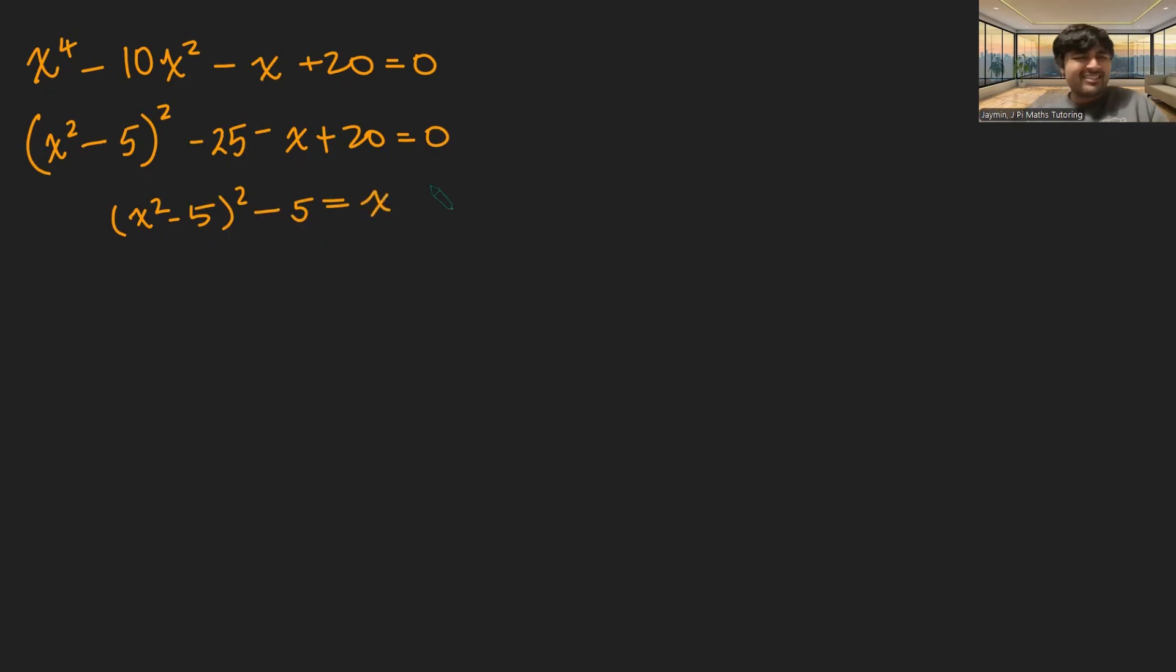Now this is kind of interesting. Why is it interesting? Here we've got x squared minus 5, but we've also got something squared minus 5. Is that a coincidence? Is there any relevance to that? Well, it turns out that there is.